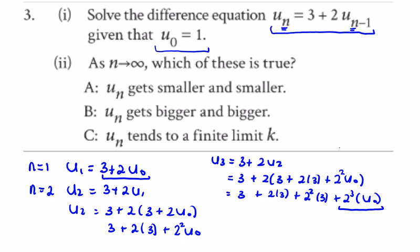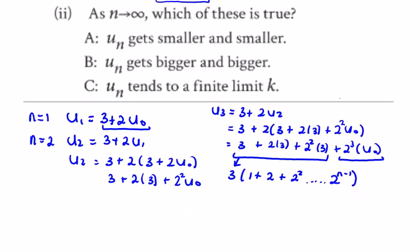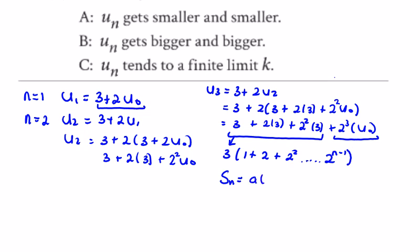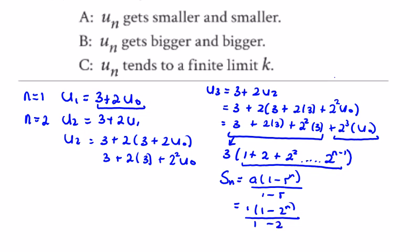If we keep u₀ and factor out 3 from the geometric progression, we have 3 as a factor leaving 1 plus 2 plus 2² all the way to 2^(n−1). The sum Sₙ is equal to a(1 − rⁿ)/(1 − r). With a = 1 and r = 2 we get (1 − 2ⁿ)/(1 − 2), which we can rewrite as (2ⁿ − 1)/(2 − 1), giving us 2ⁿ − 1. So the geometric series part is 3(2ⁿ − 1), which equals 3·2ⁿ − 3.